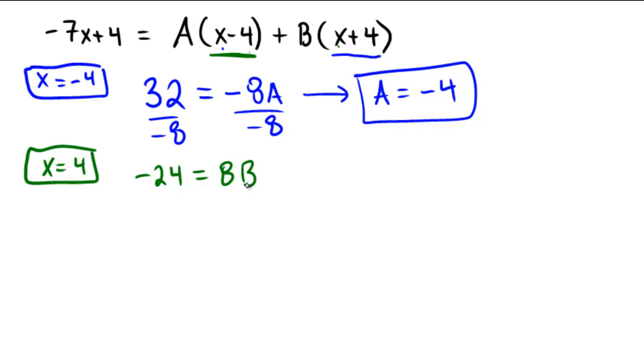And if negative 24 equals 8 times B, then that's going to mean that we're going to get, when we divide by 8, B equals negative 3.